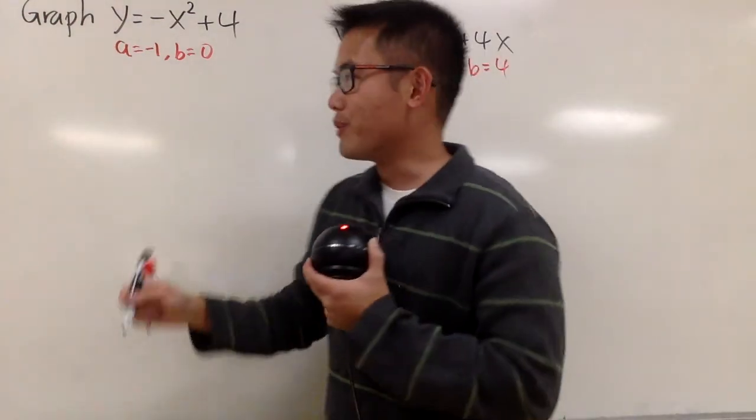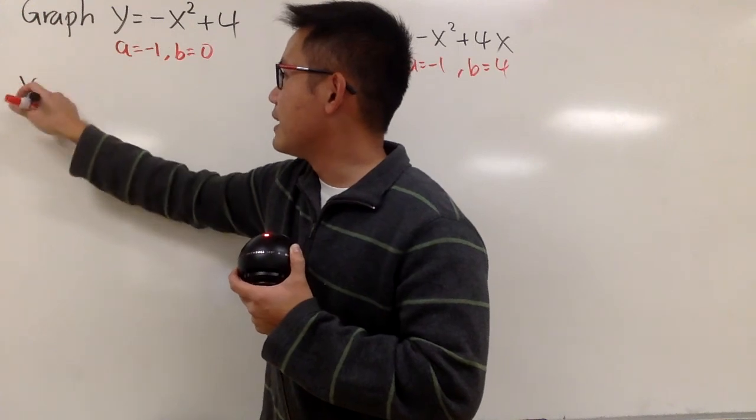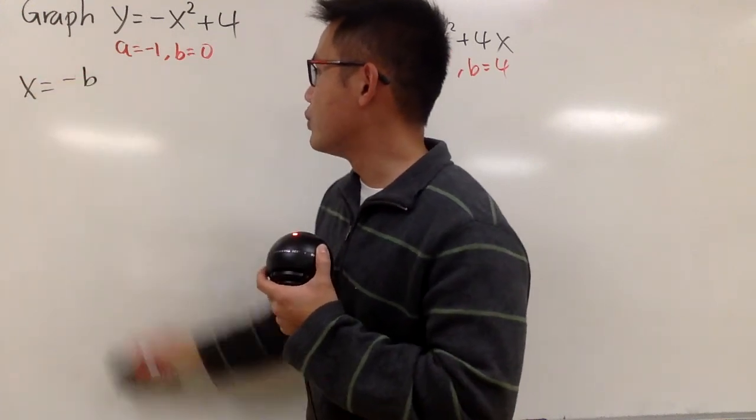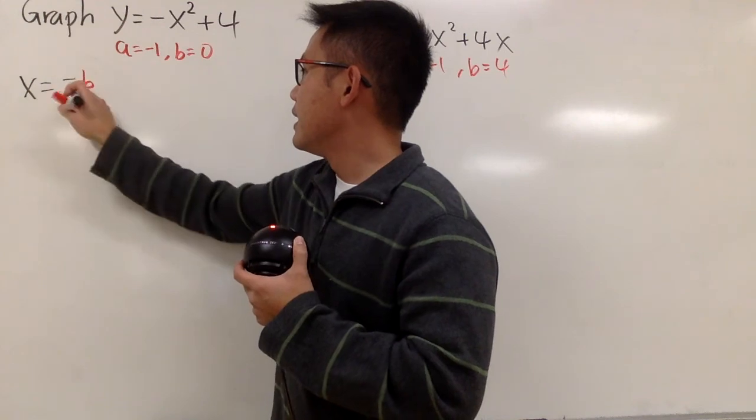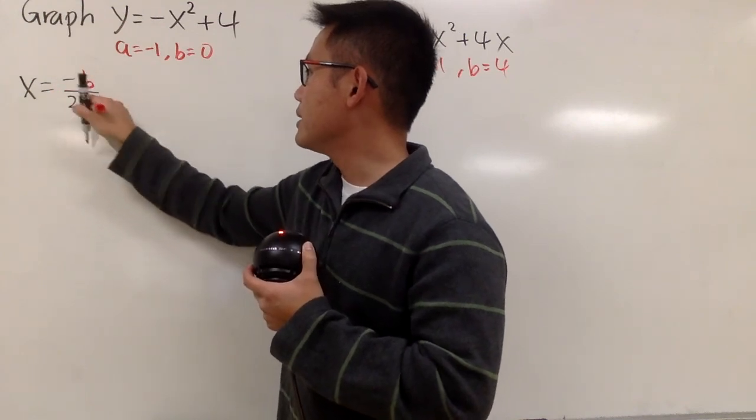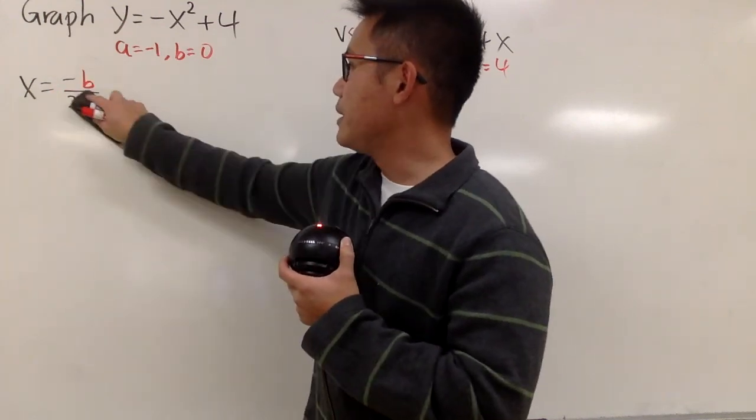But now, let's just use the formula. You see, we have to find x is equal to negative b over 2a, and let me just write this down for you guys. And in fact, you have a quick way to do it. Whenever the b is 0, the whole thing is 0.